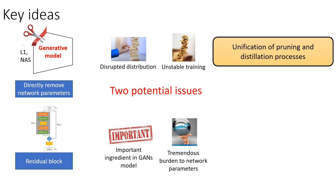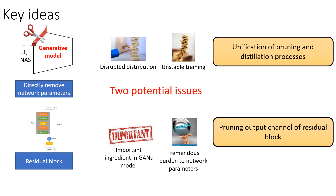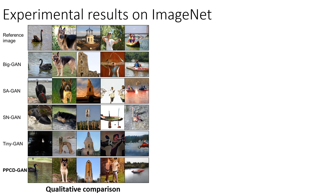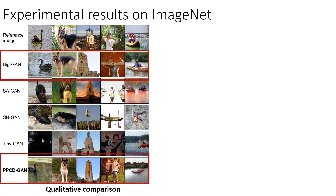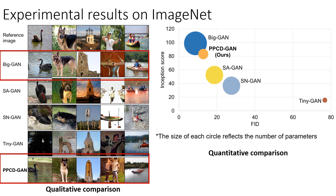We have another observation that the residual block is important in GAN models, and their parameters are tremendous, taking up the majority of network parameters. We then focus on pruning output channels of the residual block. Using these ideas, we can obtain images of the same quality as BigGAN and much better than other works. When we quantitatively compare our method with others, we can see that our BPCD-GAN is smaller than other methods while achieving comparable inception score and FID.